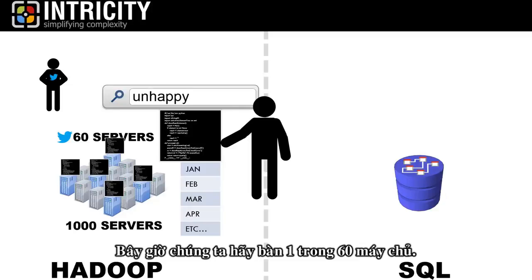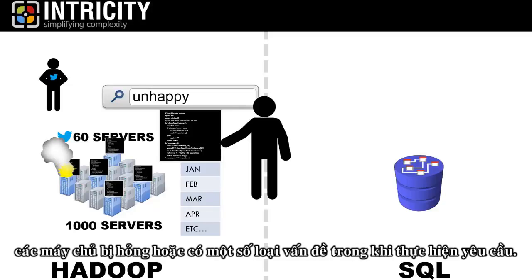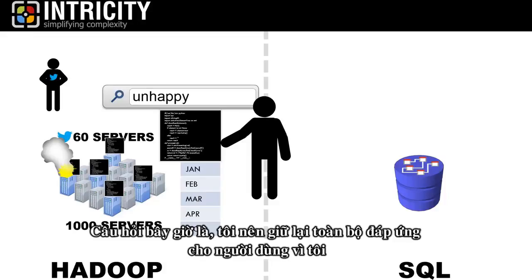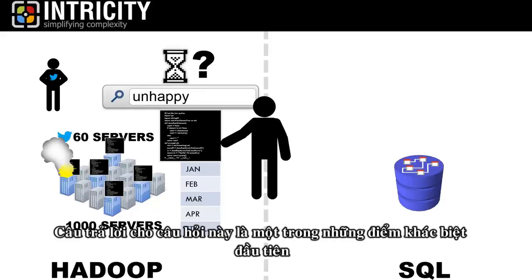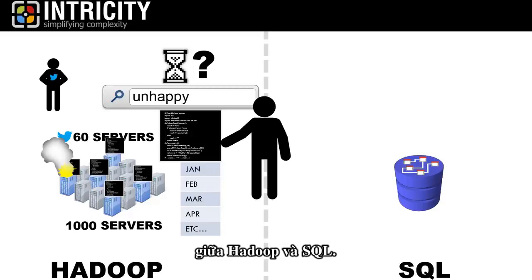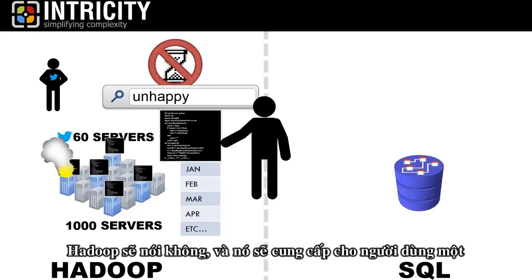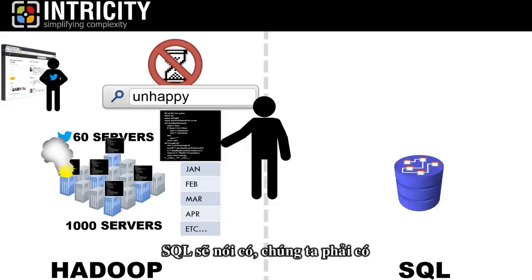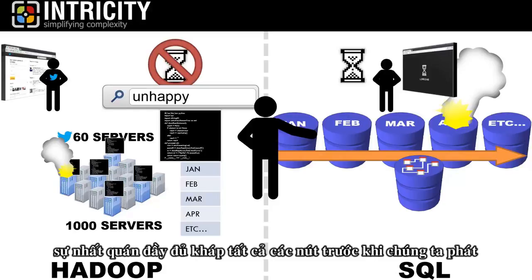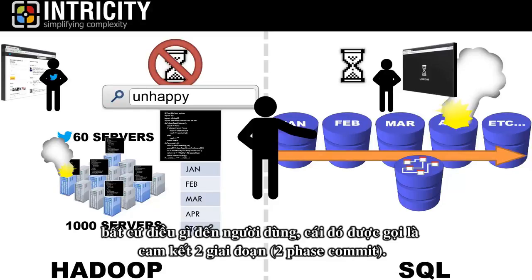Now let's say that one of those 60 servers breaks down or has some sort of issue while processing my request. The question is: should I hold up the entire response to the user because I won't have a completed data set yet? This is one of the primary differentiators between Hadoop and SQL. Hadoop would say no, and it would provide the user with an immediate answer, and eventually it would have a consistent answer. SQL would say yes, that we must have complete consistency across all the nodes before we release anything to the user, which is called a two-phase commit.